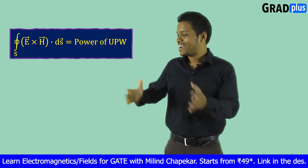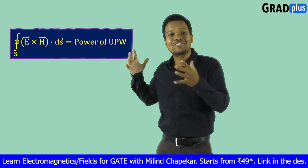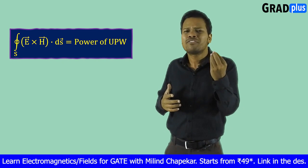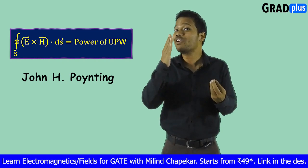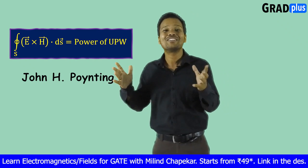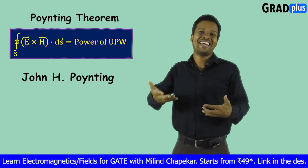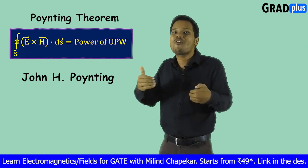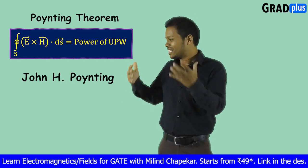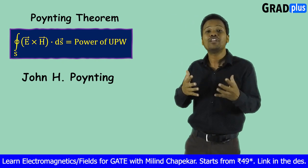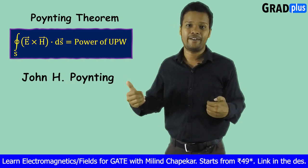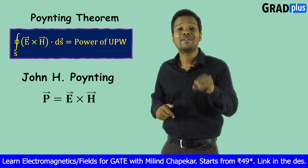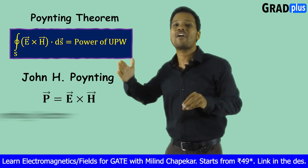This analytical treatment was first done by English physicist John H. Poynting, and hence it is known as the Poynting Theorem. Poynting — it is the name of the scientist. This theorem is actually known as the Poynting Theorem, and this vector E cross H must be called the Poynting Vector.